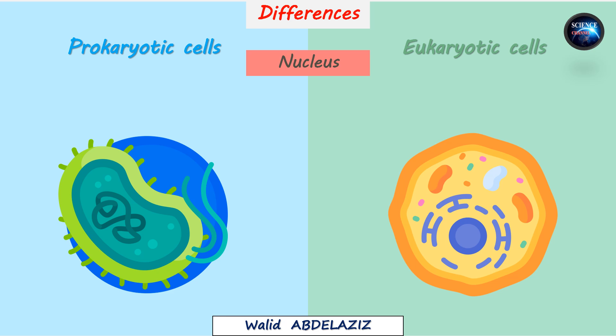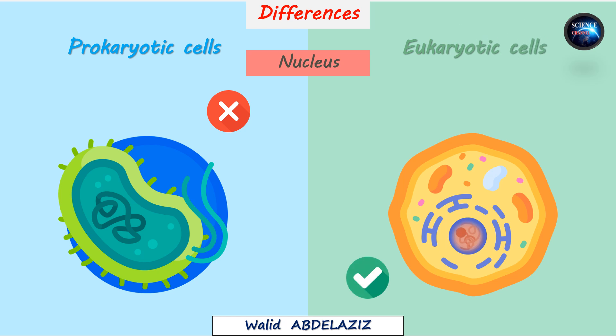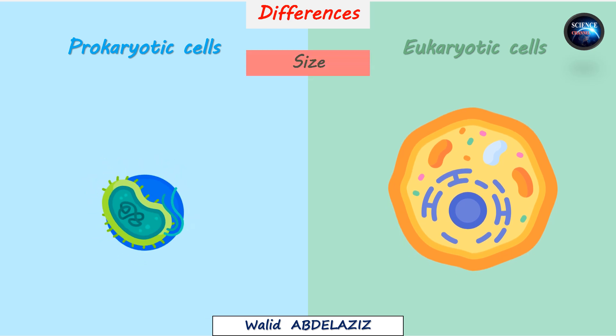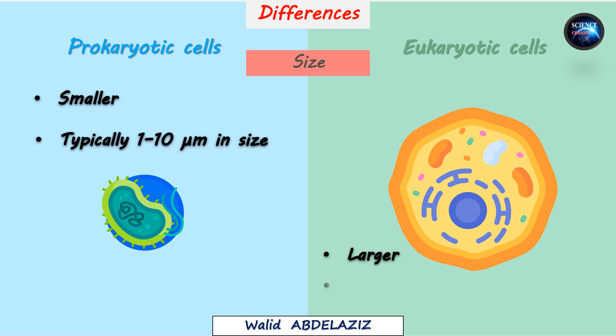Now let's explore the key differences between prokaryotic and eukaryotic cells. First, the most obvious difference is the presence of a nucleus. Prokaryotic cells don't have a nucleus; instead, the DNA flows freely in the cytoplasm. Eukaryotic cells, on the other hand, have a defined nucleus where the DNA is enclosed within a membrane. Another significant difference is in size: prokaryotic cells are much smaller, typically ranging from 1 to 10 micrometers, while eukaryotic cells are larger, typically between 10 and 100 micrometers.